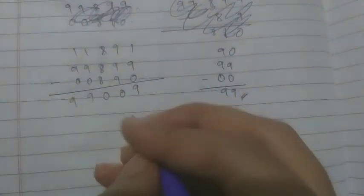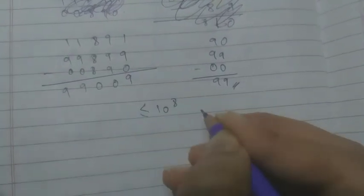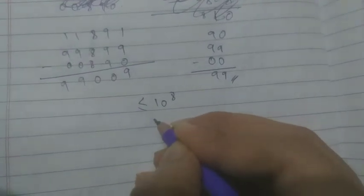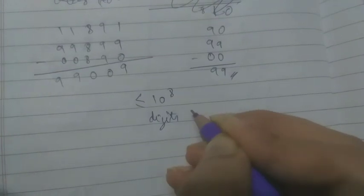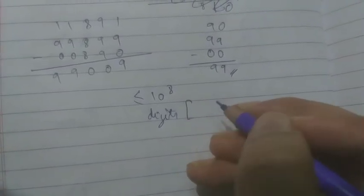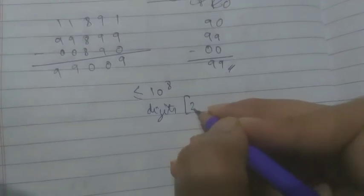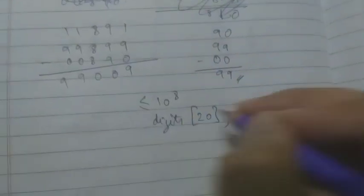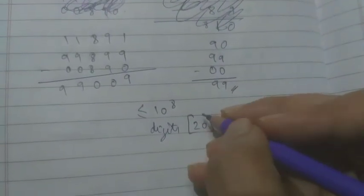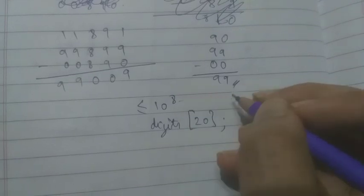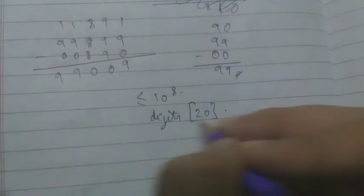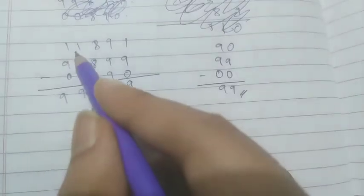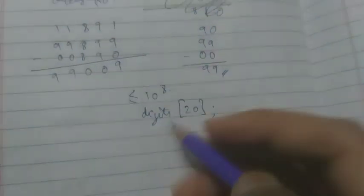So the most simplest approach of doing this problem is, since you are given that n is less than equal to 10 to the power of 8, you can make an array called digits of size, for safe being you can make it size 20, or it should be greater than 8, anything greater than 8.